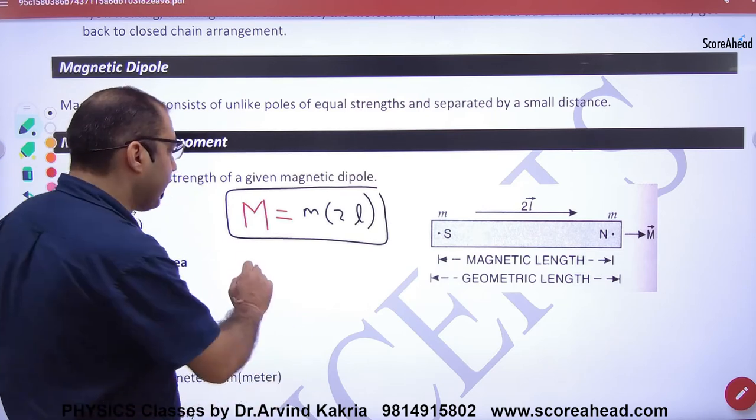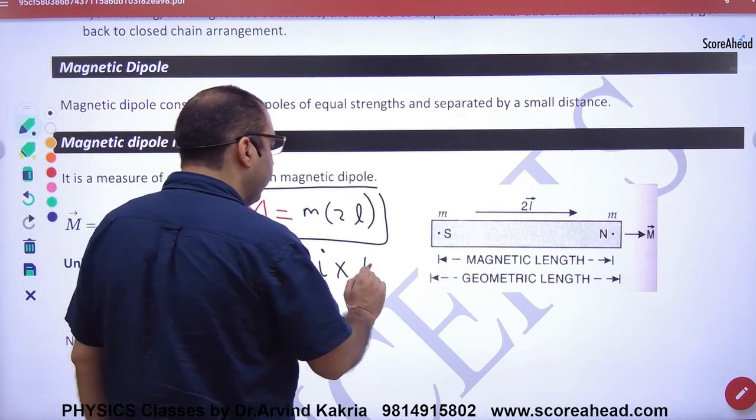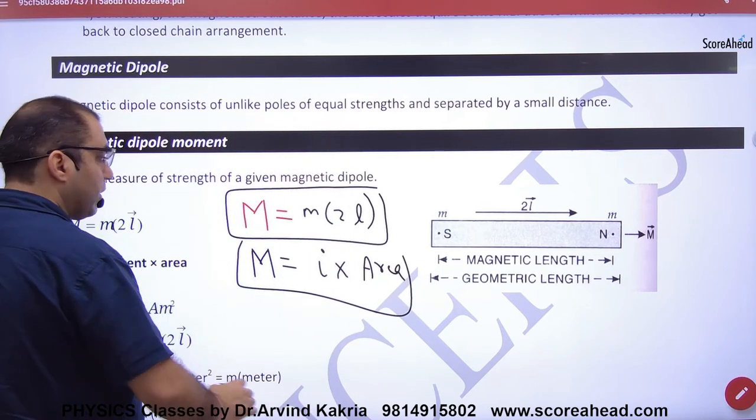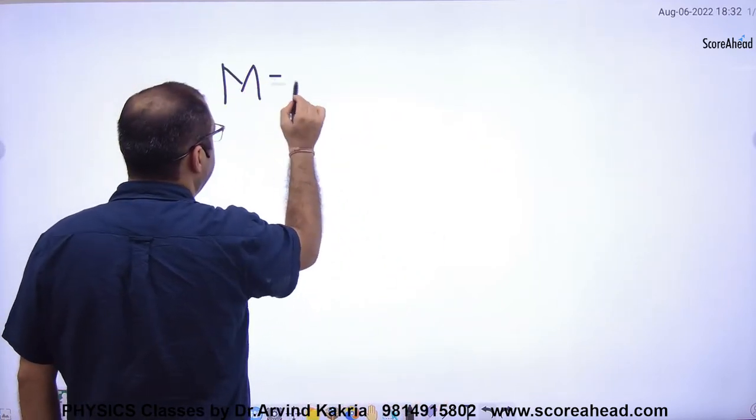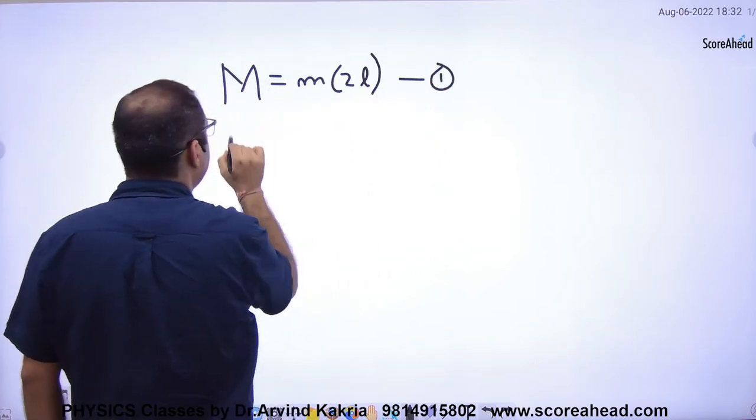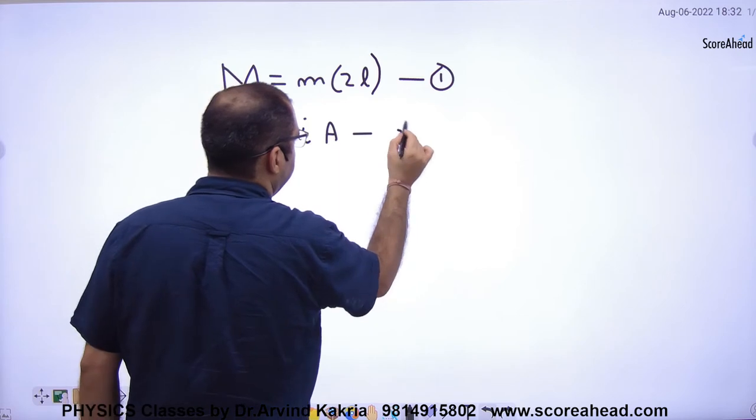Now the other way to find capital M is current into area. Right? So let me tell you, you have two ways to find capital M. The first way: pole strength into 2L. And the second way: current into area.